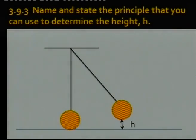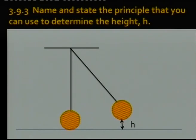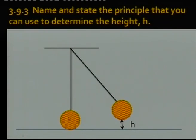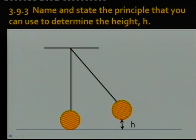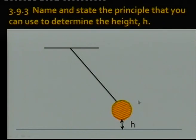Let us look at the second part of the problem: name and state the principle that you can use to determine the height h. Remember what happens once the arrow is inside the object — the object is going to move because the arrow has velocity. We also saw that the velocity of the object and the arrow at the bottom was 3.08 metres per second. So this object is now going to move to a certain height.